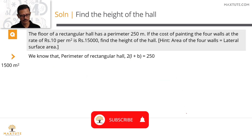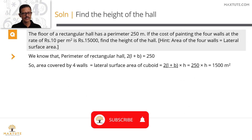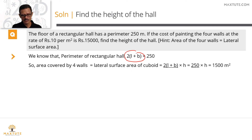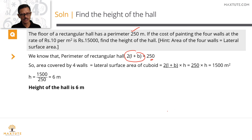To summarize in printed form: the area painted is the lateral surface area, which is 2(L + B) × H. We computed 2(L + B) = 250 from the first statement. Plugging that in: 250H = 1,500, so H = 6 meters.